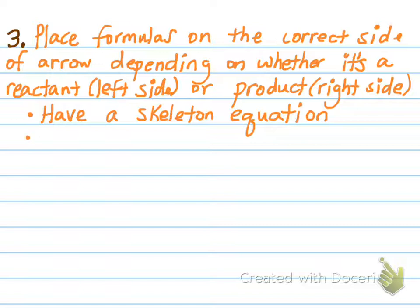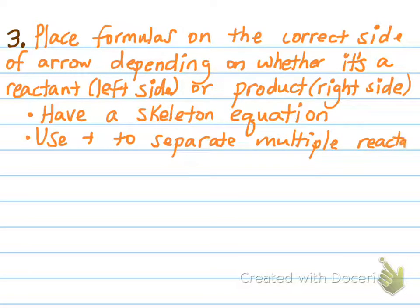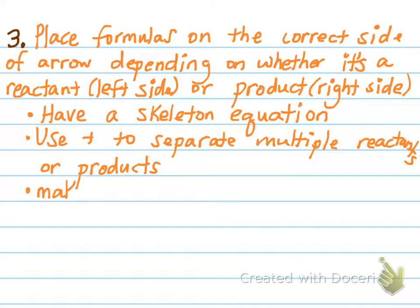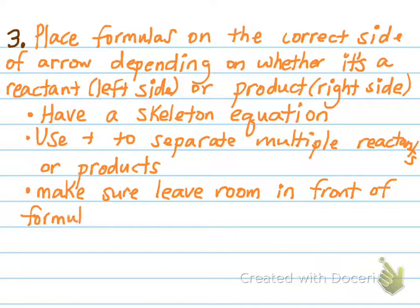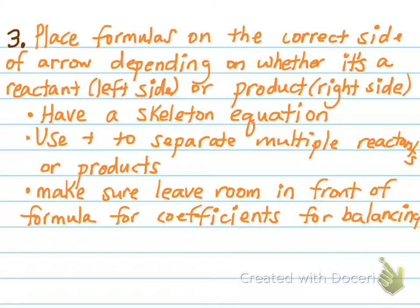In a skeleton equation, you're going to use a plus sign to separate multiple reactants or products. A suggestion: make sure you leave room in front of your formulas for coefficients for balancing, because you're going to potentially need to put some coefficients in front — so don't write things so tightly together that you don't have space for that.